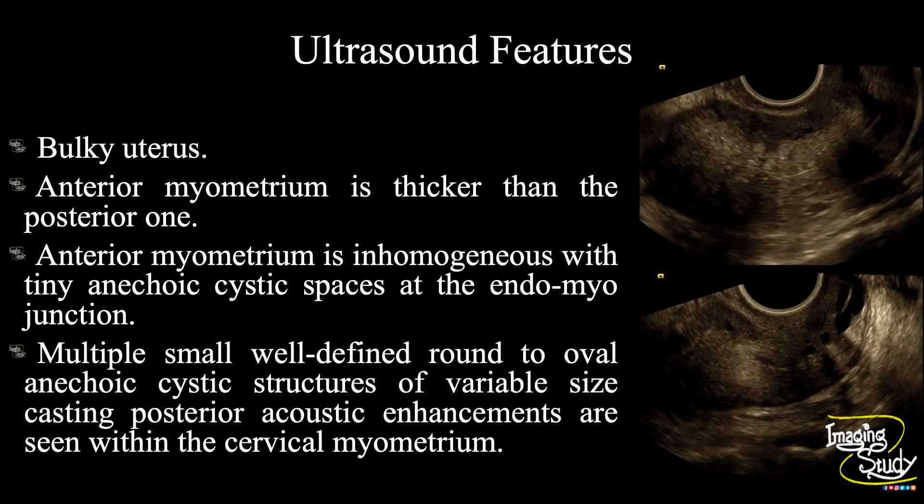In summary: the uterus is slightly bulky; the antero-myometrium is thicker than the posterior one; the antero-myometrium is inhomogeneous with numerous tiny cystic spaces seen at the endomyo-junction; and multiple small well-defined round to oval anechoic cystic structures of variable size casting posterior acoustic enhancements are seen within the cervical myometrium. These features suggest a case of adenomyosis with cervical Nabothian cysts.